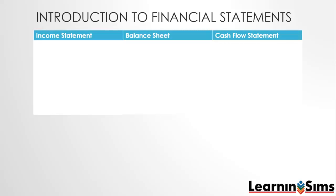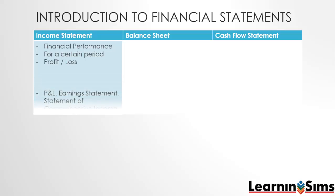The income statement shows the financial performance of an organization — how it did for a certain period, which is normally a year. Its result is either a profit or a loss. Do not be confused when you hear the statement referred to with other names like P&L, earning statement, or statement of comprehensive income. It is essentially the same statement showing the same information.